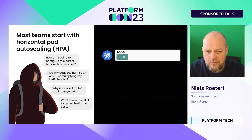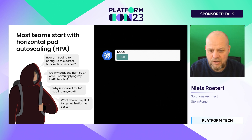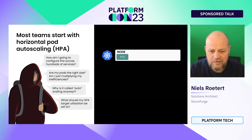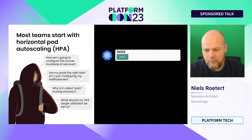Many people start with HPA because it has the least amount of impact on your application. It's fairly simple to configure and it can respond really rapidly. So if you see that the usage of your application is bursting, it's quite easy for HPA to spin up multiple replicas to cope with the load. But how are you going to decide on the target utilization?